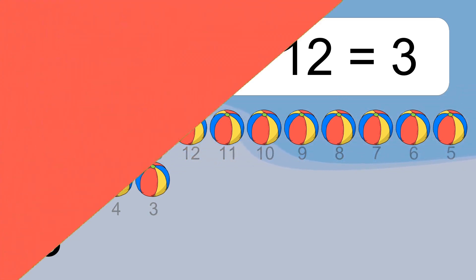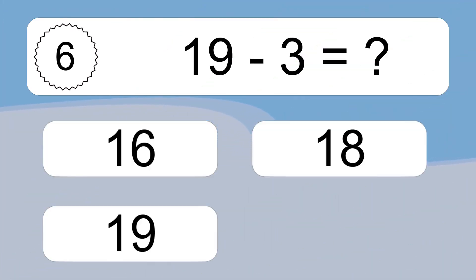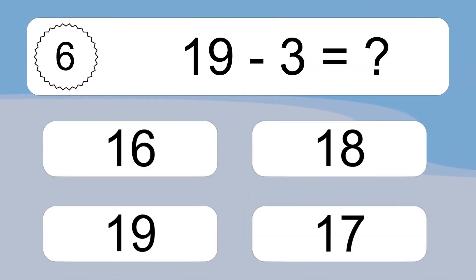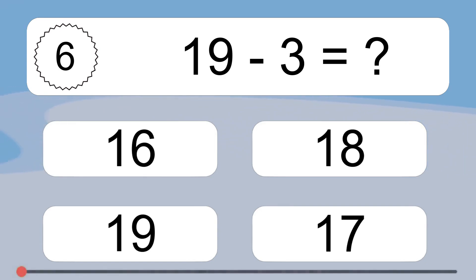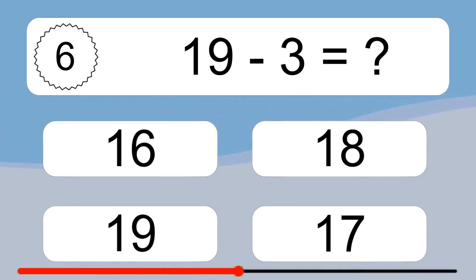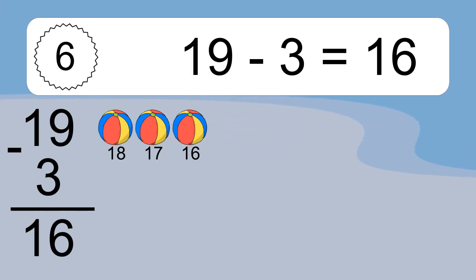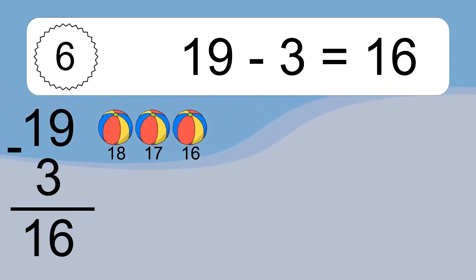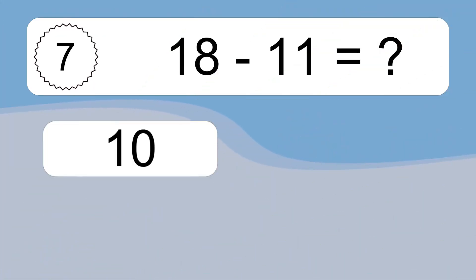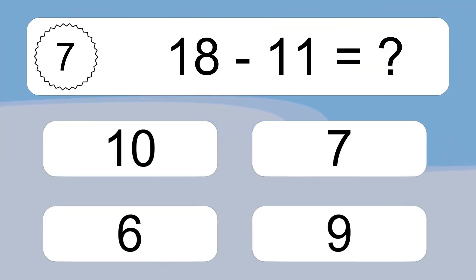19 minus 3 equals what? 19 minus 3 equals 16. Let's count it: 18, 17, 16. 18 minus 11 equals what?